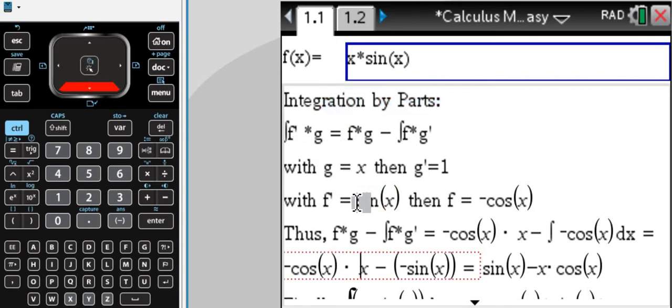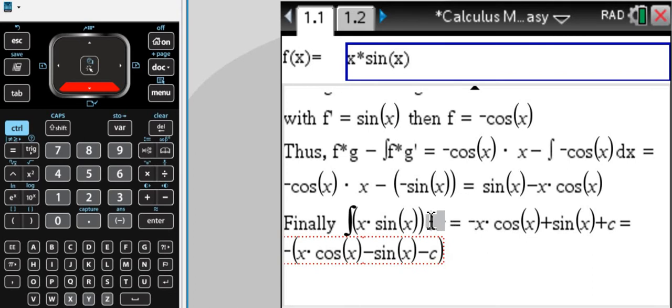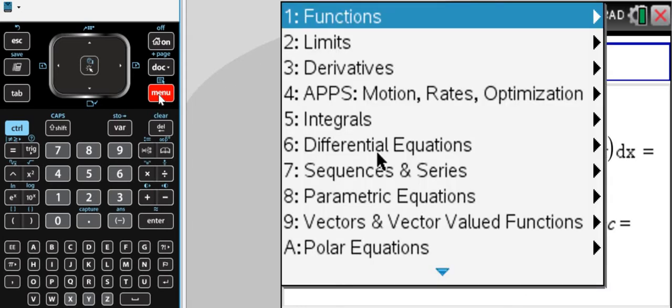It does it out step-by-step until you arrive at the final answer, just like what we saw on the other screen. So this is all for one variable functions.